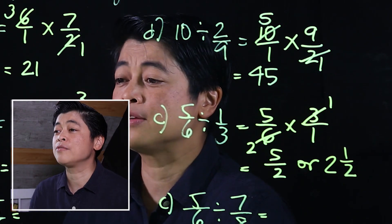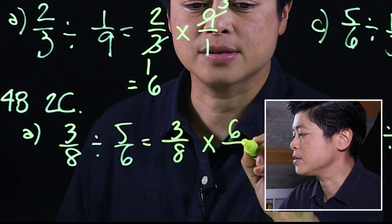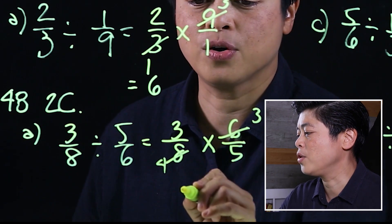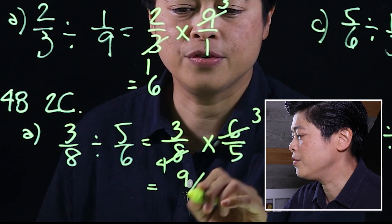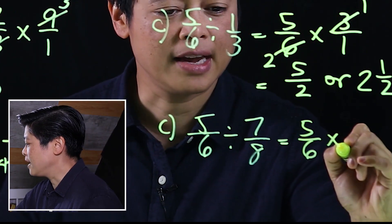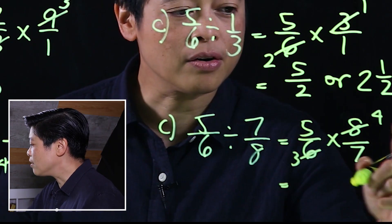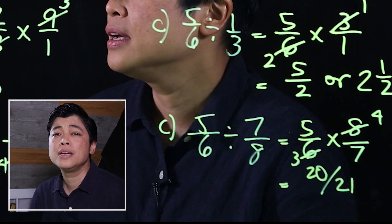On page 48, letter C, doing the same process: this is 3 eighths times 6 over 5. We cancel 3 and 6, which gives us 9 over 20. Finally, 5 sixths cannot divide, times 8 over 7. Cancel to get 4 and 3. Multiplying across gives 20 over 21. Remember, fractions cannot be divided — they can only be multiplied. When you see division of fractions, change to a multiplication problem, then change the fraction after the multiplication sign into its reciprocal, meaning flip it.